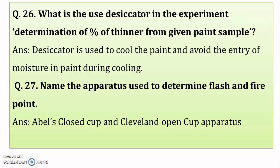What is the use of a desiccator in the experiment for determination of percentage of thinner from a given paint sample? The desiccator is used to cool the paint after heating, to avoid entry of moisture into the paint during cooling. Calcium carbonate powder is kept inside the desiccator to absorb moisture.